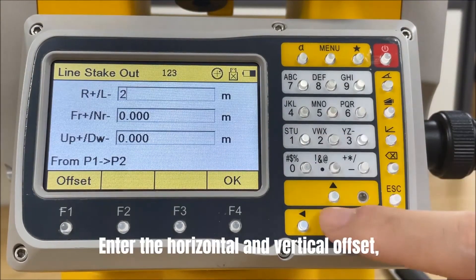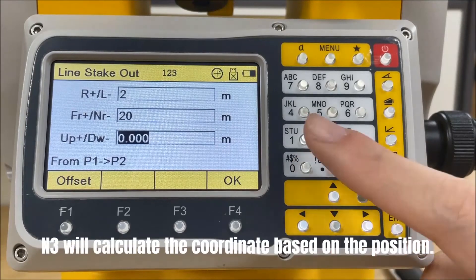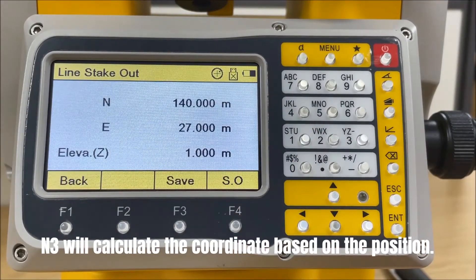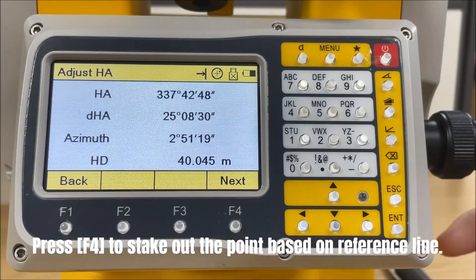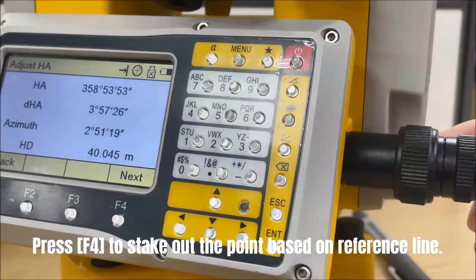Enter the horizontal and vertical offset, and N3 will calculate the coordinate based on the position. Press F4 to stake out the point based on reference line.